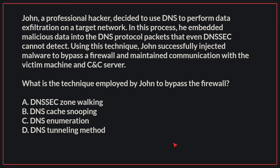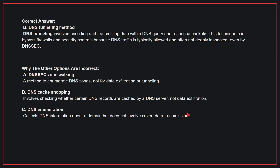The correct answer is D, DNS tunneling method. DNS tunneling involves encoding and transmitting data within DNS query and response packets. This technique can bypass firewalls and security controls because DNS traffic is typically allowed and often not deeply inspected, even by DNSSEC.